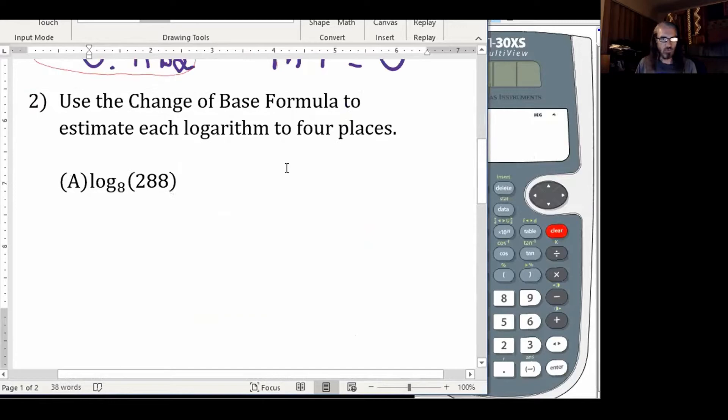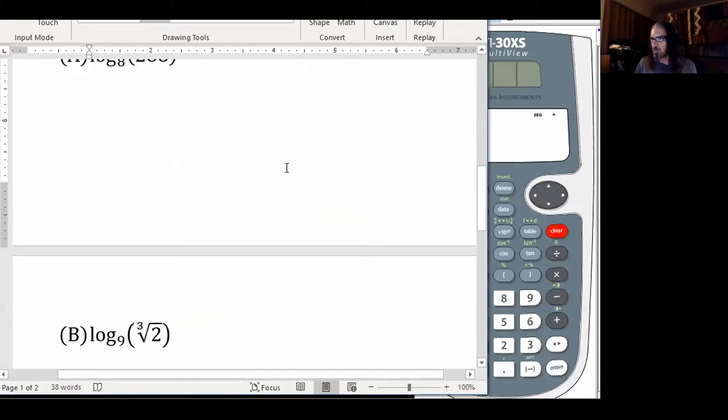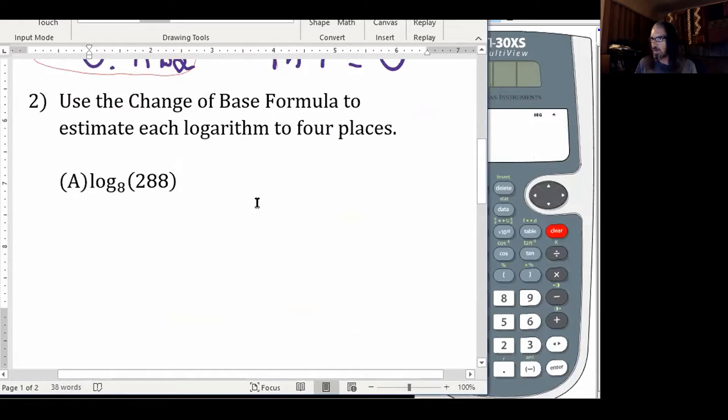In number two, this also has two parts, supposed to use the change of base formula to estimate each logarithm again to four places.